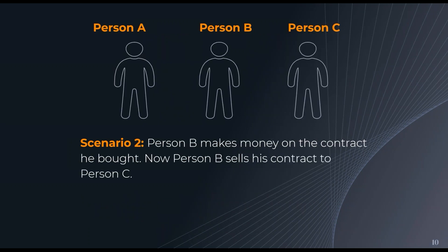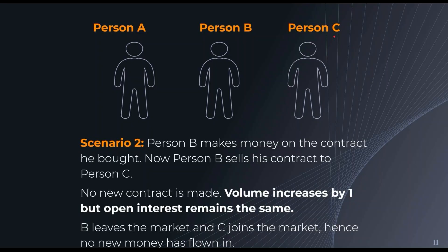Following on from the first example, let's introduce person C. Person B has made money on his contract and no longer wants to hold his position, so he sells the contract he bought from person A to person C. The contract which A created goes from person B to person C. In this instance, no new contract is made. Although volume increases by one because a trade has been made, there is no increase in open interest — it remains the same because B needs to leave the market for C to enter. This is a crucial difference between volume and open interest.